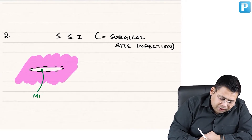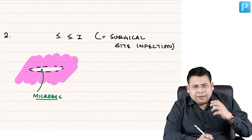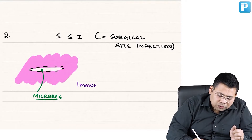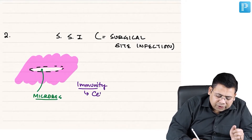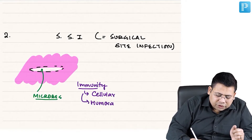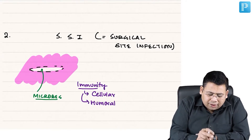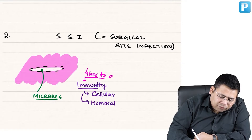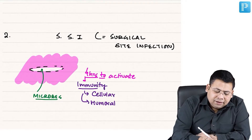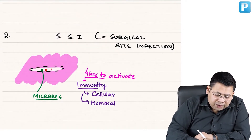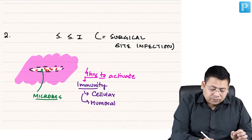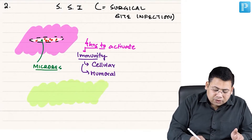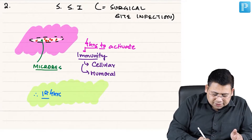Once the skin is opened, microbes can enter inside. To prevent infection, you require immunity. There are two types: cellular and humoral. The body takes a minimum of four hours to activate any form of immunity. During these first four hours, your wound is exposed to all organisms.